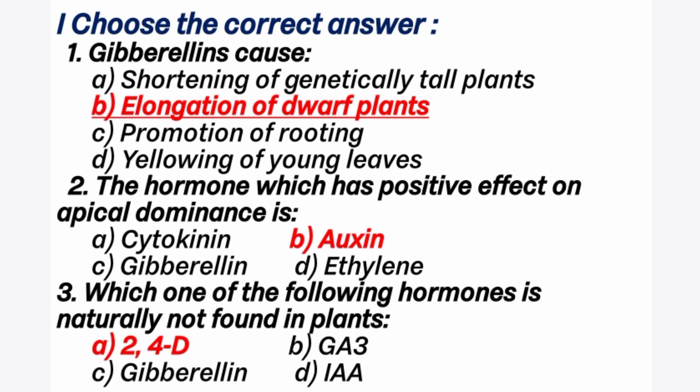Question 1. Choose the correct answer. Gibberellin causes — answer is B option: elongation of dwarf plants.